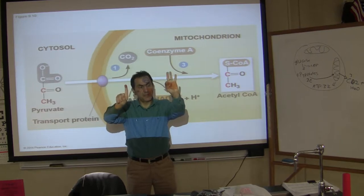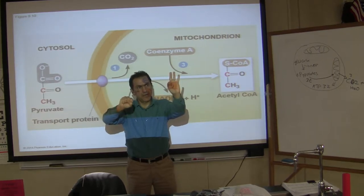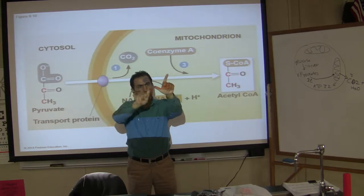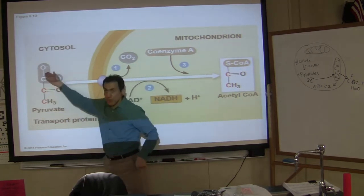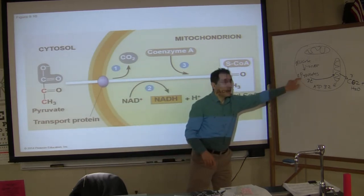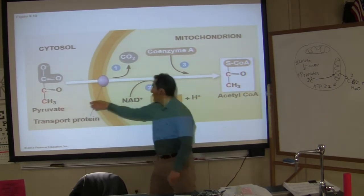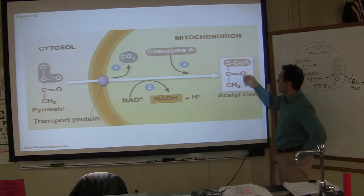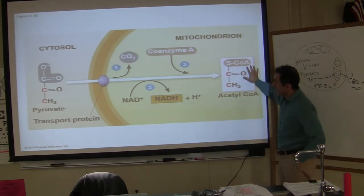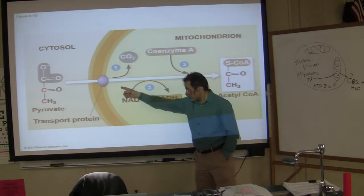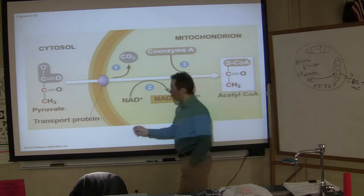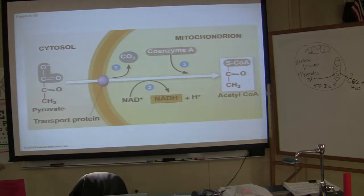Three carbons here and three carbons there. I'm talking about one of those pyruvates. Pyruvate inside mitochondria becomes acetyl-CoA. Another thing that happens: NAD becomes NADH. When pyruvate is becoming acetyl-CoA, you also create one NADH.